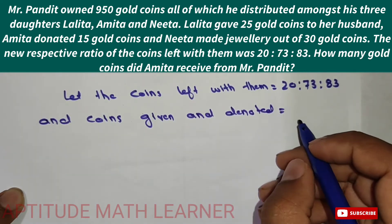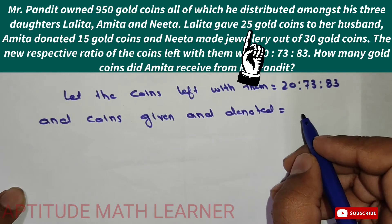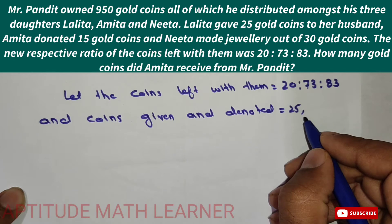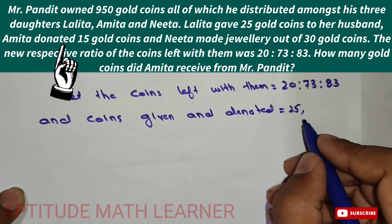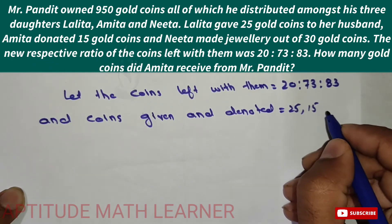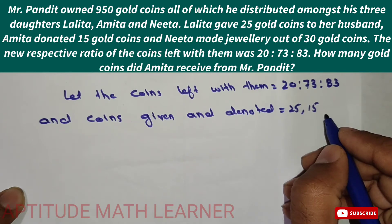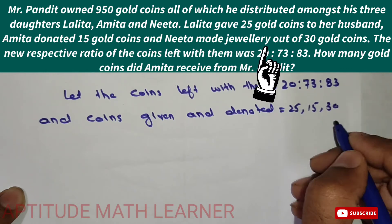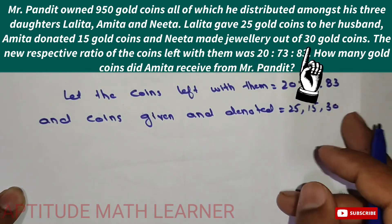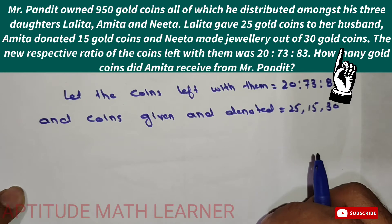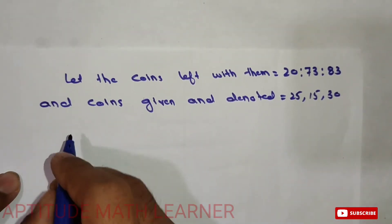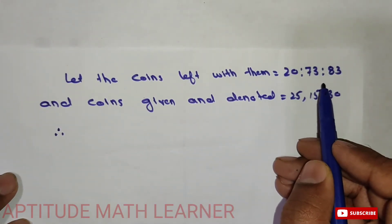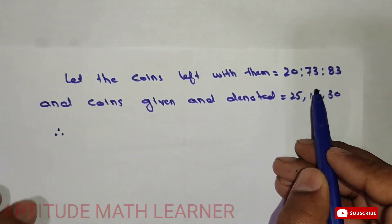The coins given away are: Lalitha gave 25 coins to her husband, Amita donated 15 coins, and Nita made jewelry from 30 gold coins. So these are the amounts each daughter gave or used before arriving at the final ratio.